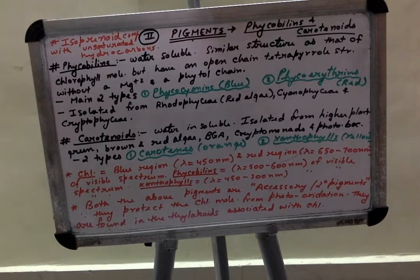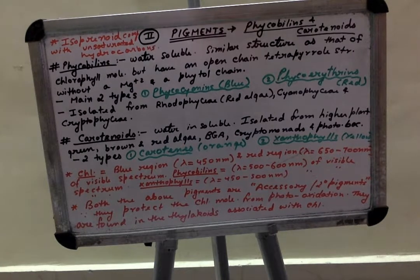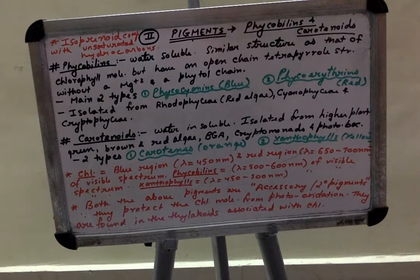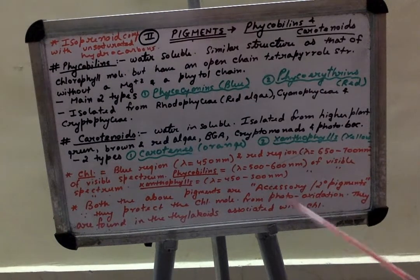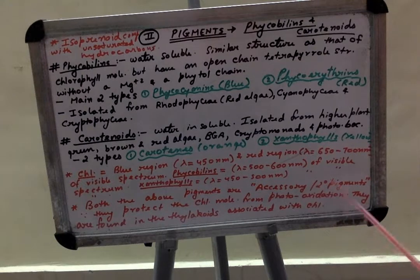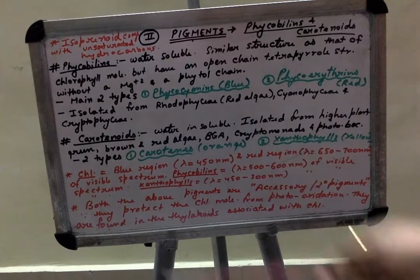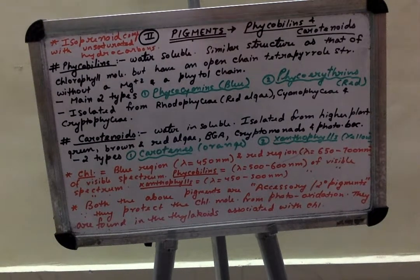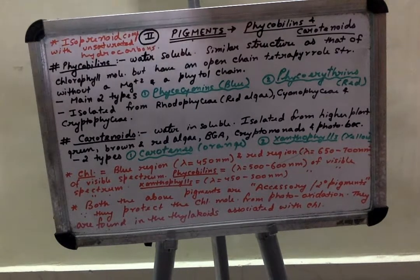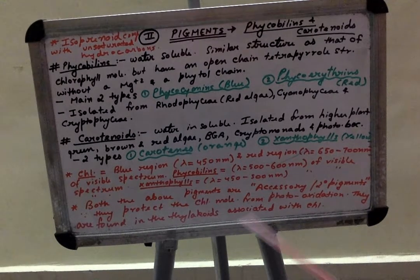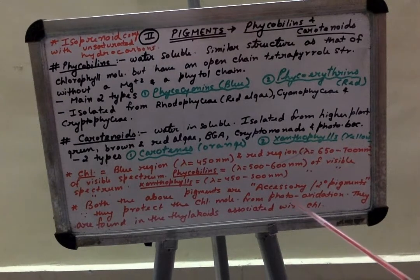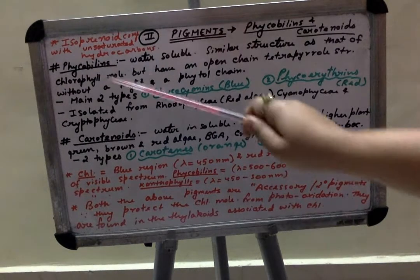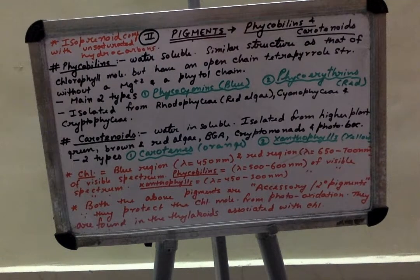This damage is protected or the protection is given by both these pigments. Therefore they are known as accessory as well as secondary pigments. They are both needed in the process of photosynthesis as well as for the protection of chlorophyll molecule. Therefore, chlorophyll molecule which is present in thylakoids is associated with these two pigments also for its protection in the thylakoid.